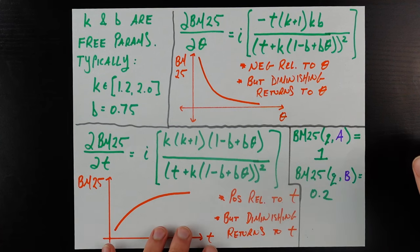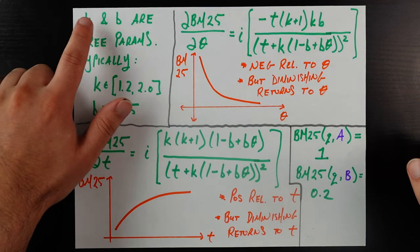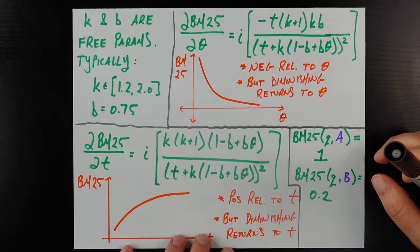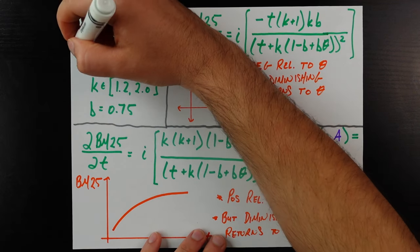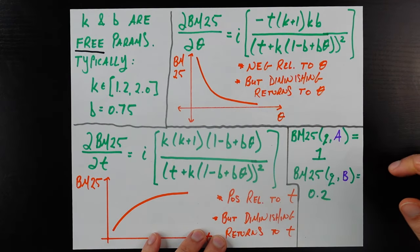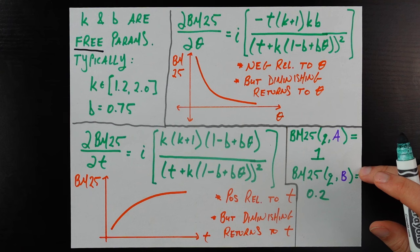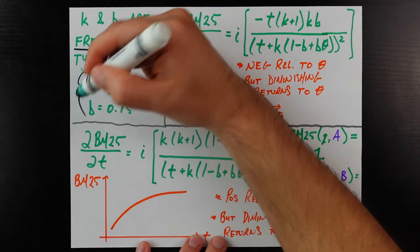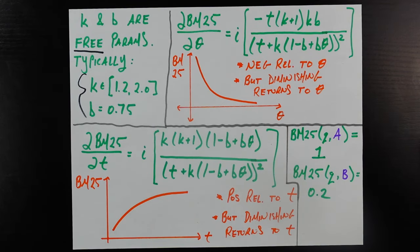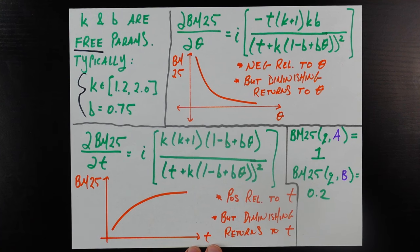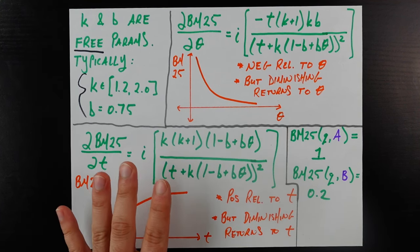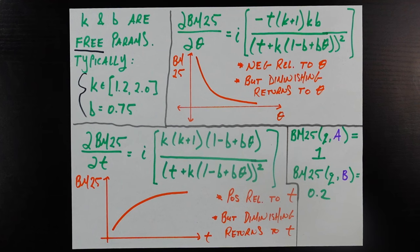Before we go into the partial derivatives, I want to mention that k and b are free parameters — whoever is designing the search engine can change them to fine-tune the exact ranking they want. Typically as a starting point, k is chosen in the range of 1.2 to 2, and b is typically set to 0.75. But these are not hard and fast rules; you're allowed to change them to fit your needs. Now let's go ahead and take those partial derivatives.